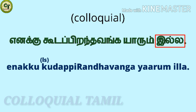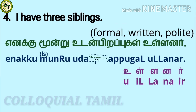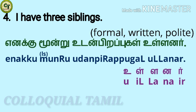This is the formal form, which is also the written form and the polite form. I am using three siblings as an example here. After watching my numbers videos, you can substitute the number you want in the place of three. To say 'I have three siblings' —